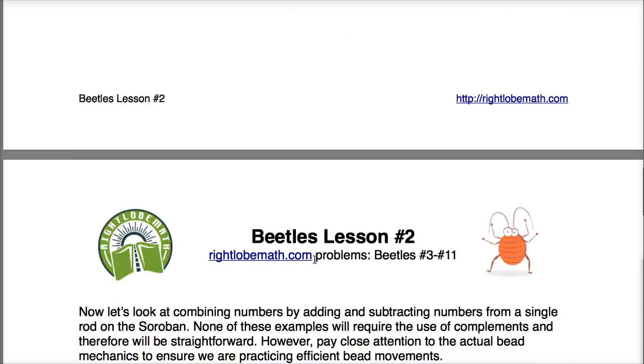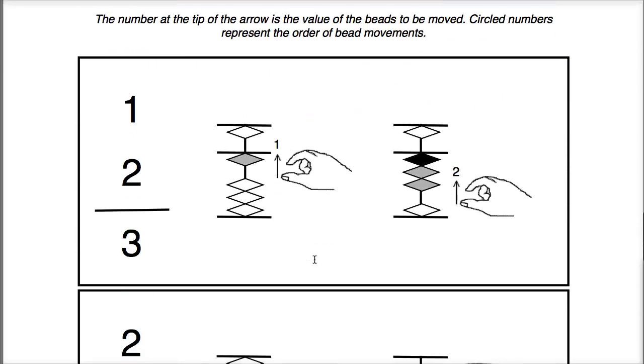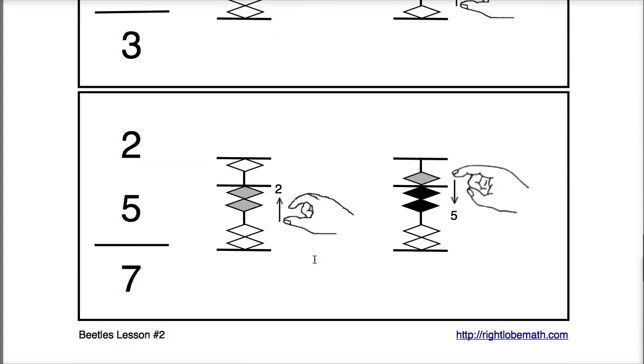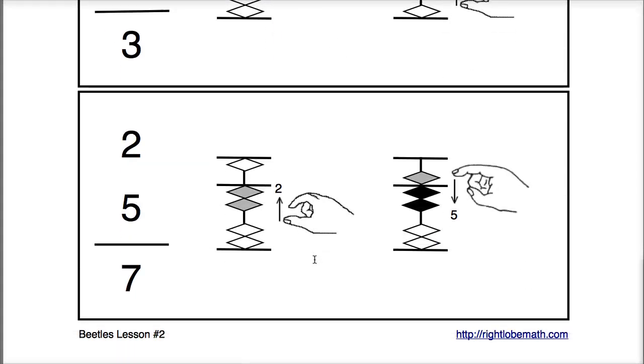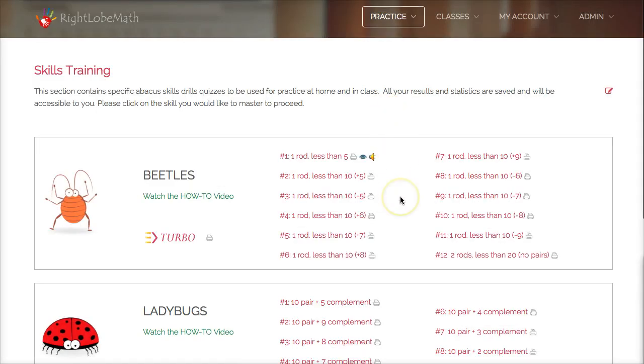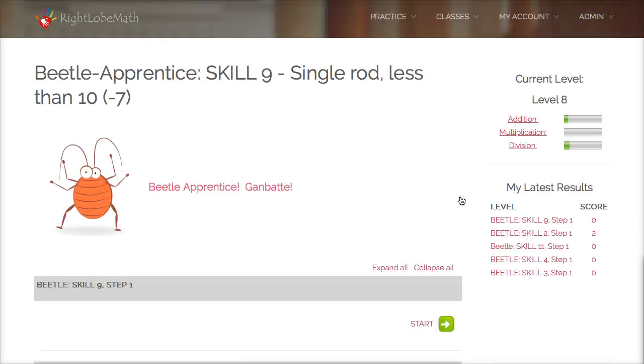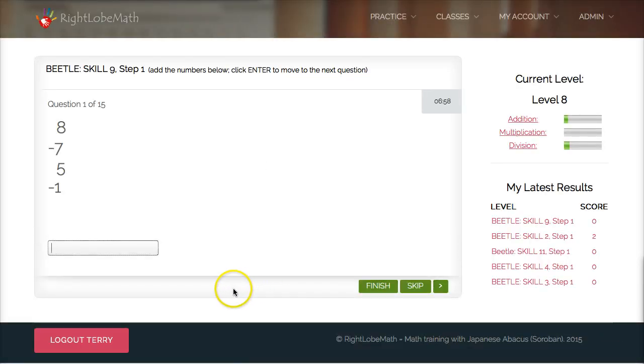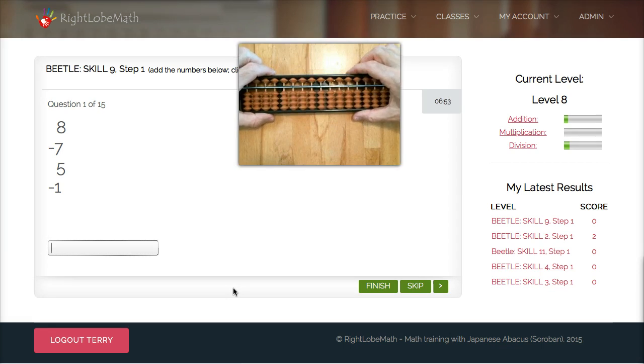Now there are a number of example problems in the PDF document you can go through and it will show specifically each of the finger movements. I'm going to jump over here to the Beatles skill training module and go into problem set number nine. Start up my quiz module here and let's go ahead and give a few of these a try and look at the finger movements.